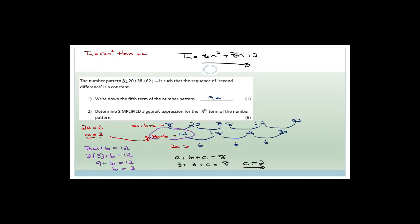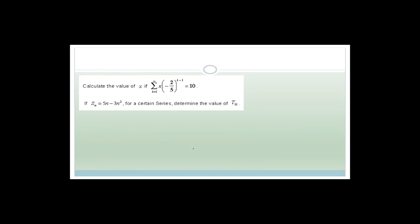That's how you find the nth term of a quadratic sequence. The next question says: calculate the value of x if we've got the sum from k = 1 to infinity of x times (−2/5)^(k−1) equals 10.